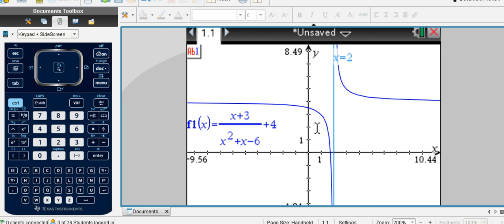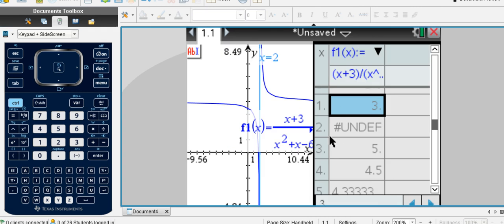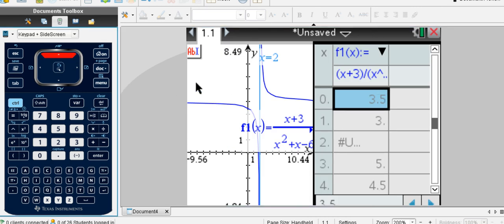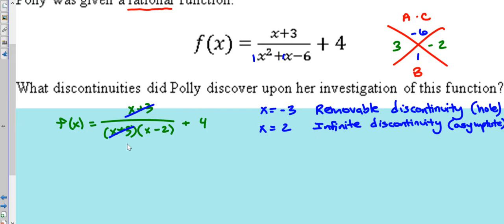And then we also have a hole at x equals negative 3. There should be a hole right there. Now it doesn't show it here, but if we go to table, we can see. Press Control T and look right here at 2. The infinite discontinuity, any discontinuity, will say undefined in our table. So we have that one at 2, and we also have it at negative 3. So it is in fact a hole right here at x equals negative 3. There's a hole right there in the graph. It should be an open circle like that.